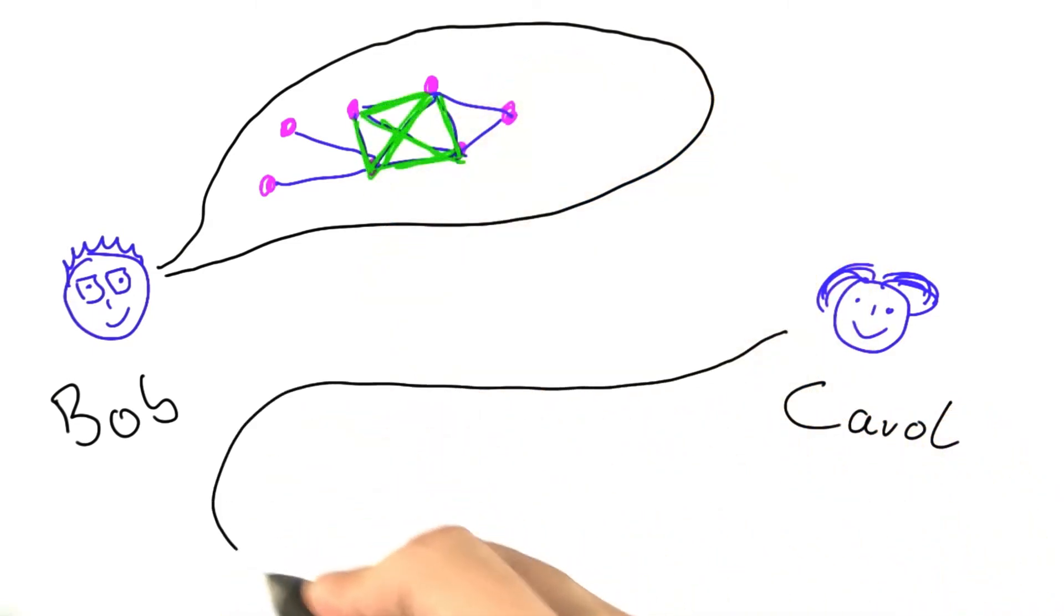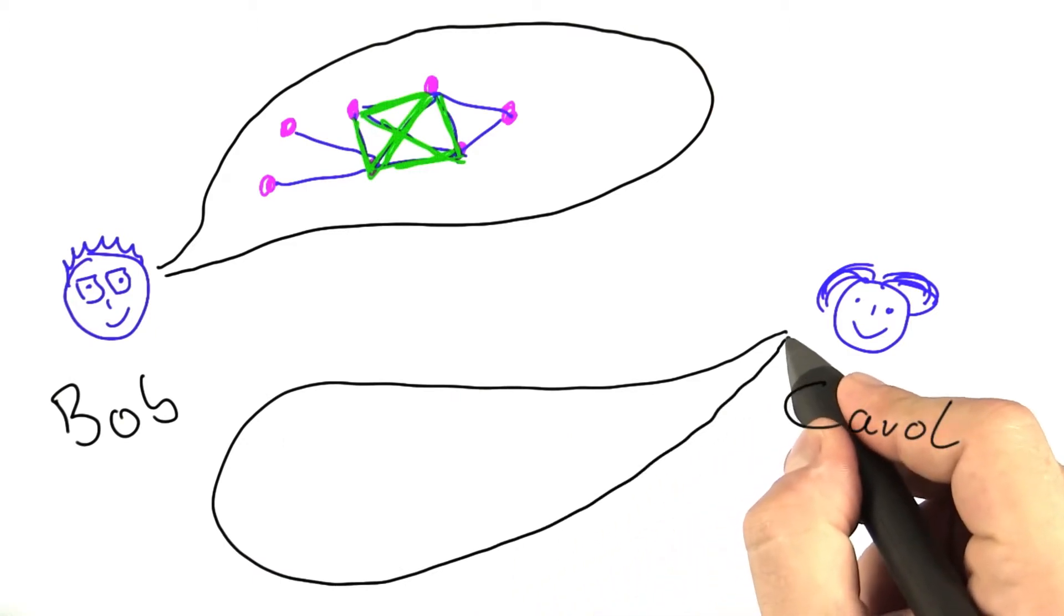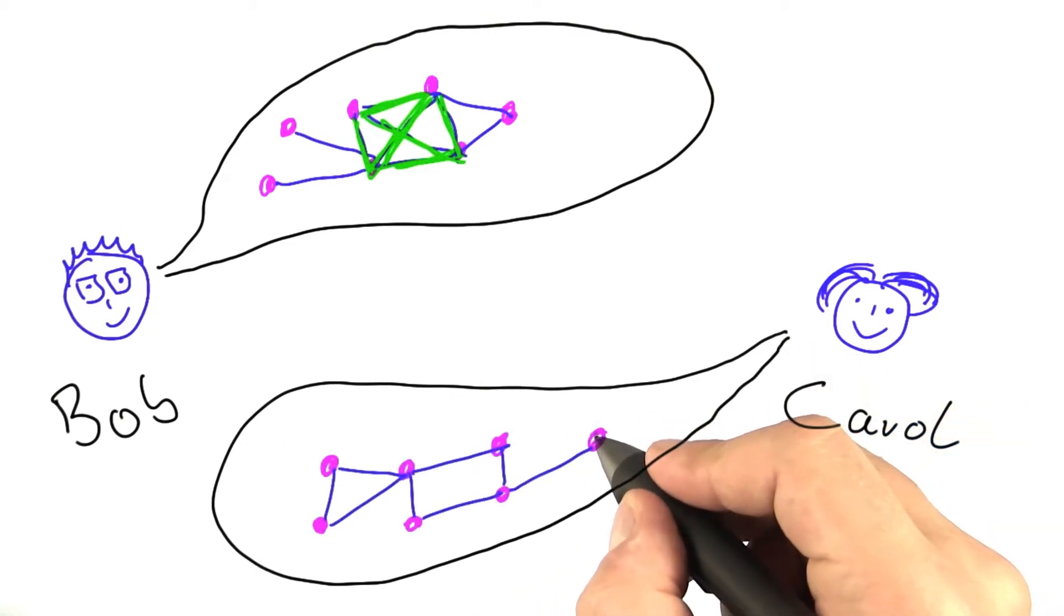And Carol explains her problem, where she is looking for potential investments that are not connected to each other, such as this one here.